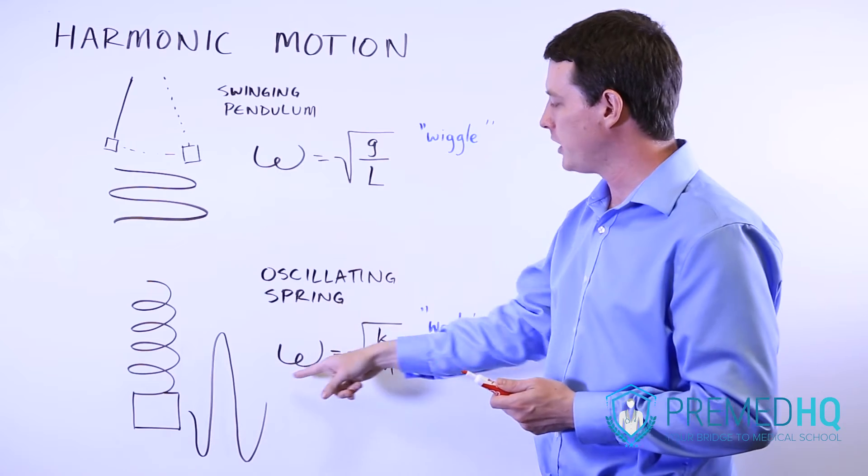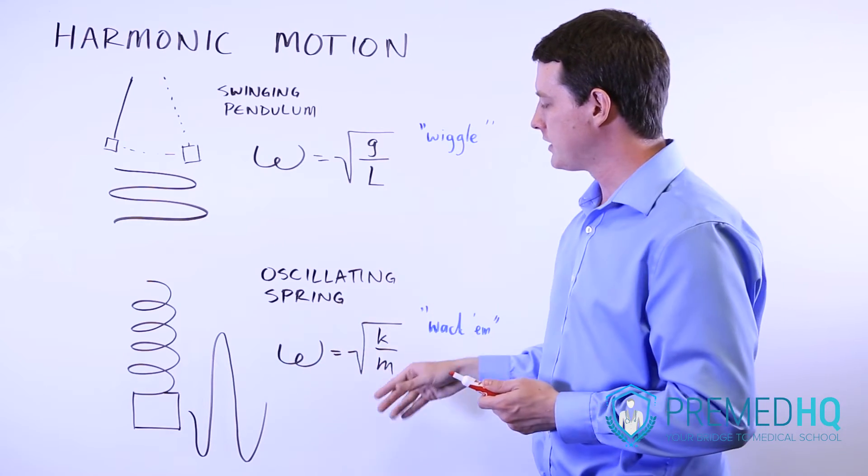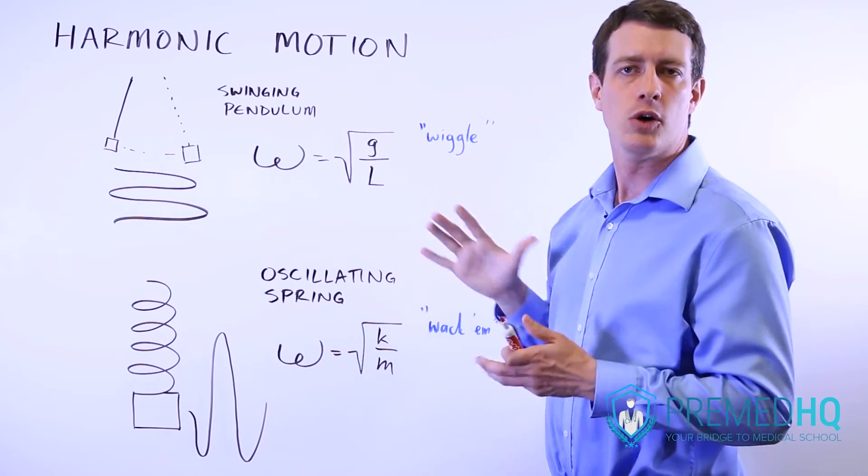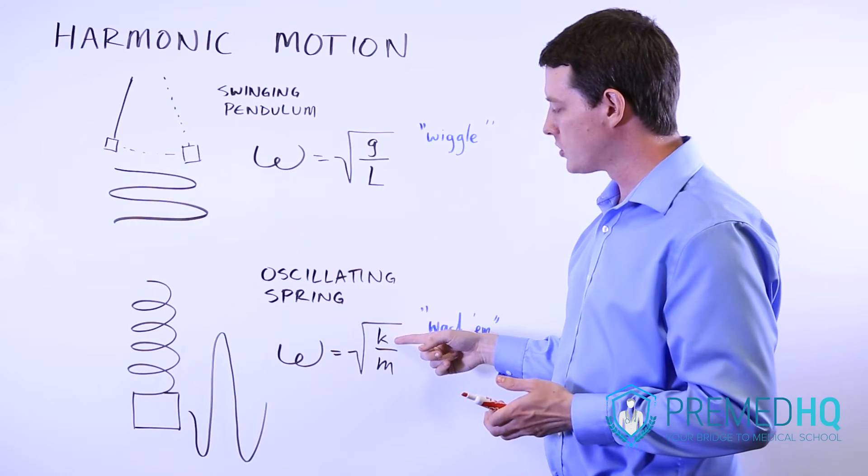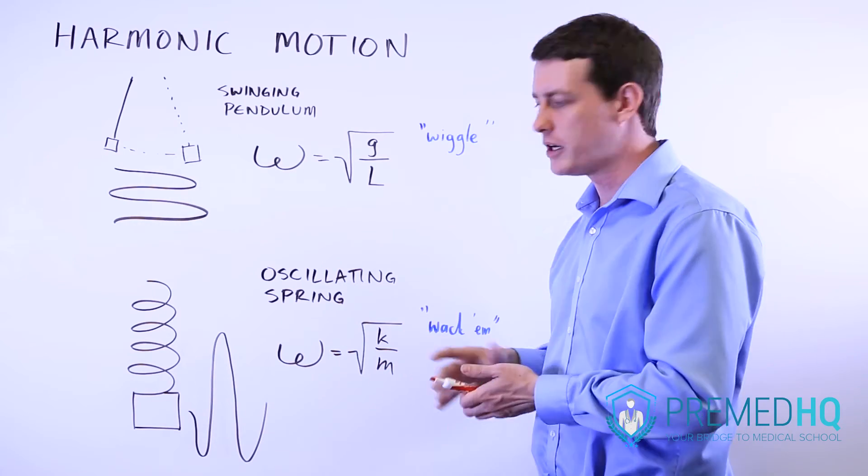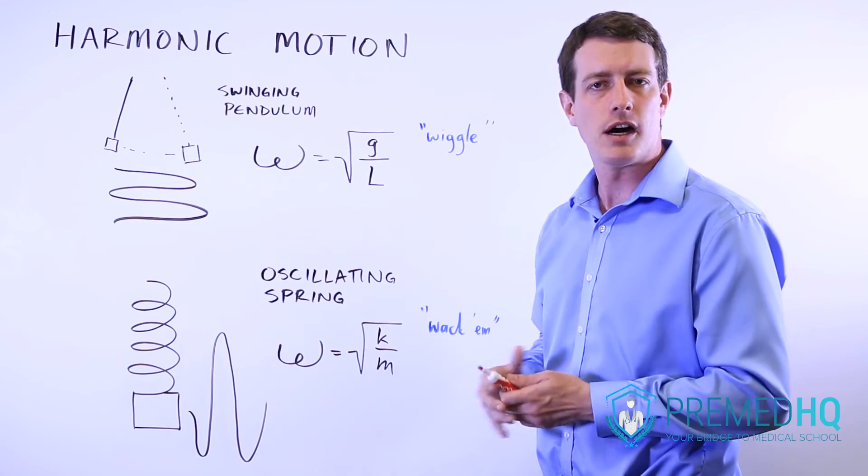And for the oscillating spring, what you have is the angular frequency is equal to the square root of k over m, where k is your spring constant that you use for your Hooke's law equations and m is the mass of the object.